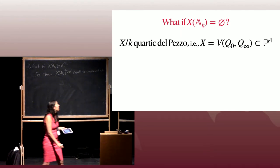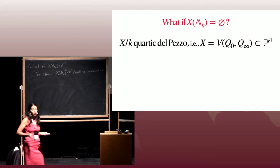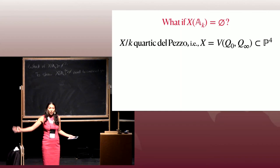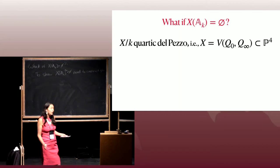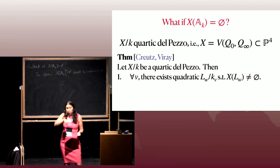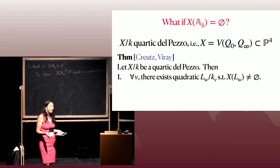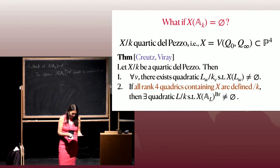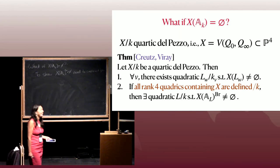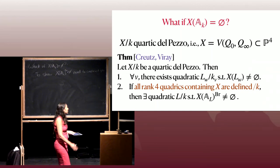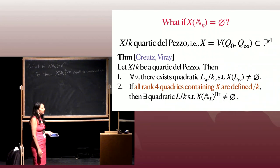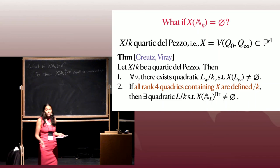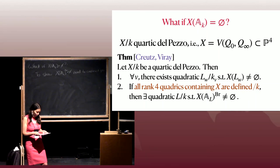Now let's look at the quartic del Pezzo surfaces case. Remember, this is when we have no known construction of having any quadratic points, so we shouldn't expect something as strong. Rovin was proving results over all quadratic or even-degree extensions. Here, even just getting some quadratic point would be good. In joint work with Creutz, we prove that locally you always get quadratic points — over any local field, there's always a quadratic extension where you obtain points. We can do it almost always over K globally. We do show for many types of these families that there is a quadratic extension where you have a non-empty Brauer set, so we should have global points over that extension.